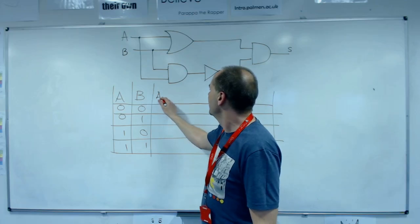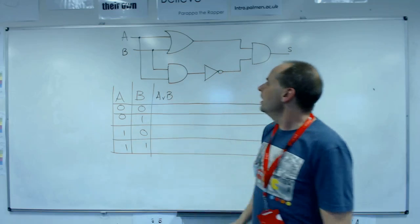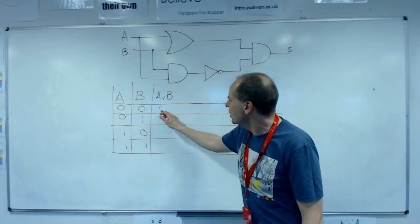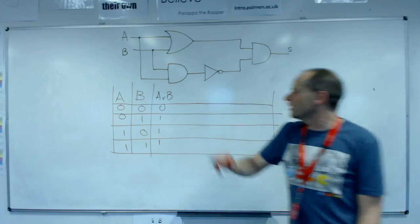So we've got A or B. So OR, wherever we've got a one, we get a one as output. So there's just one zero and three ones.